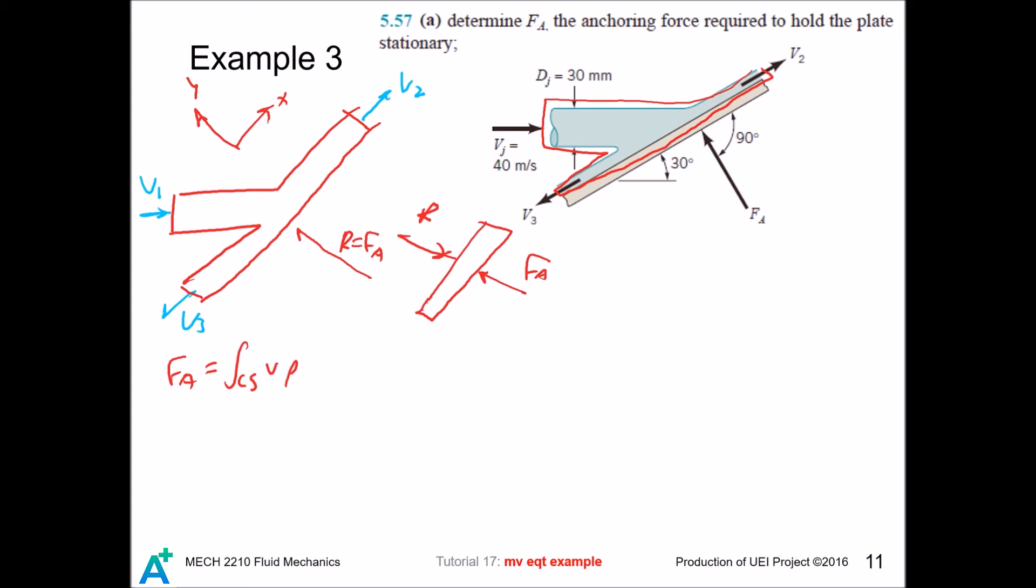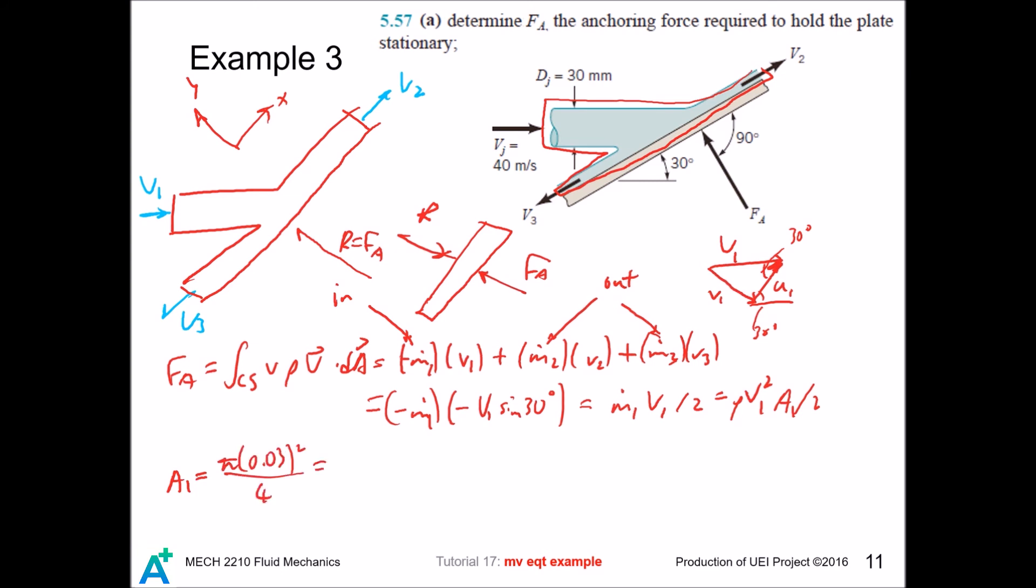And if we apply the linear momentum equation in the Y component, and there are 3 sections here, with 1 going in, 2 going out, and V1 is the Y component of this velocity. And this angle is 30 degrees, so this is 30 degrees. And we compute the area of 1. We get F_A equals.